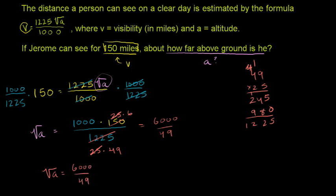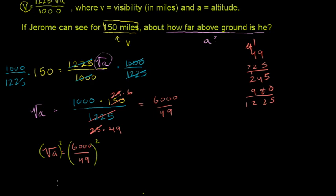So you have the square root of a is equal to 6000 over 49. We want to square both sides of this equation. And we get a, the altitude that Jerome, how far above the ground Jerome is, is going to be equal to 6000 squared over 49 squared.